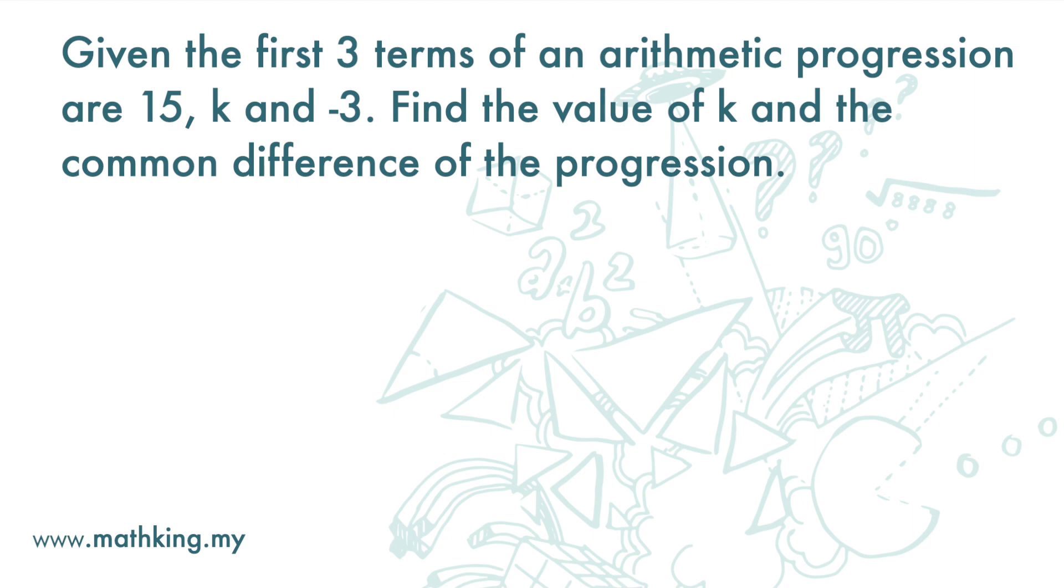Given the first three terms of an arithmetic progression are 15, k and negative 3, find the value of k and the common difference of the progression.